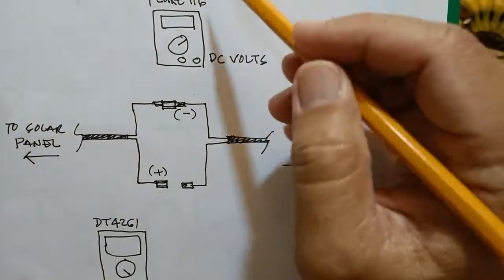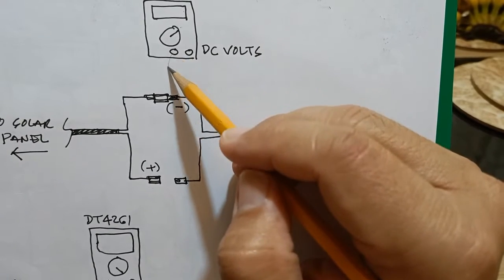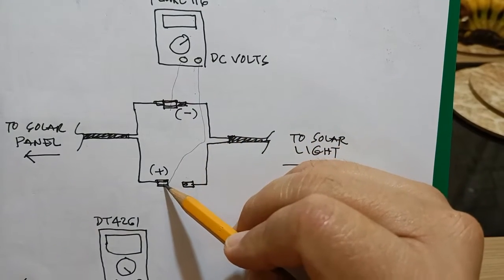This allows me to connect the Fluke 116 set at DC volts on the negative side and also on one of the positive sides. This will measure the DC voltage.